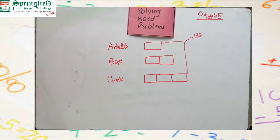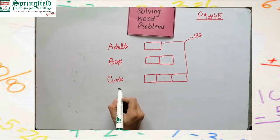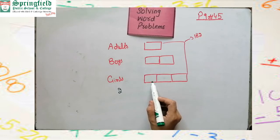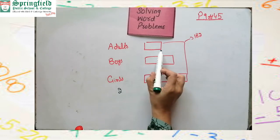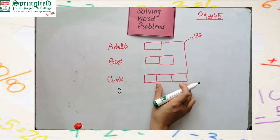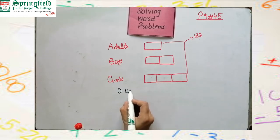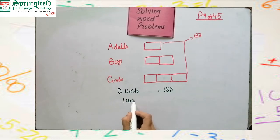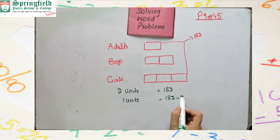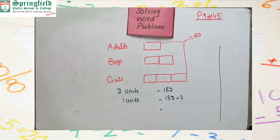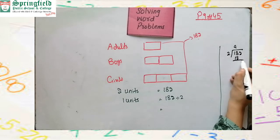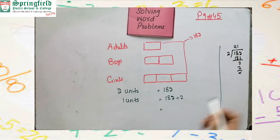Now we can make the statement: two units leave the one unit because they are saying 182 more than adults. The difference between this point and this point is equal to 182, so two units equal 182. Then one unit will become 182 divided by 2. Two is multiplying here; when 2 moves to the other side it will divide. 182 divided by 2: 2 nines are 18 and 2 ones are 2, so the answer is 91.